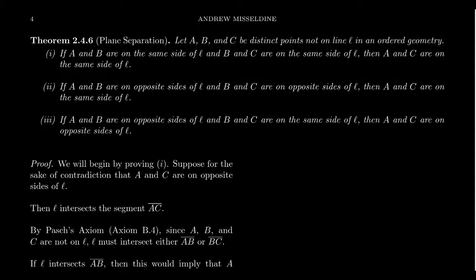This lecture is really focused on Pasch's axiom. It turns out that Pasch's axiom is actually named after Moritz Pasch. We haven't seen any axiom so far that has been named after a person. I keep referring to them as Hilbert's axioms, but none of them are named after Hilbert himself. Our Pasch's axiom, axiom B4, isn't actually the version that Hilbert himself used. Instead, it's named after Moritz Pasch.